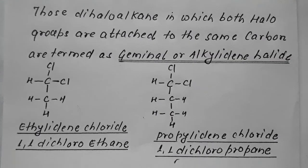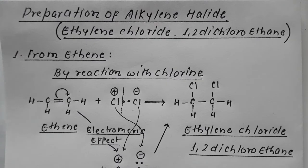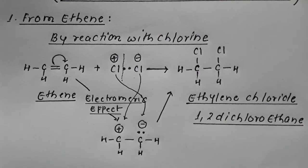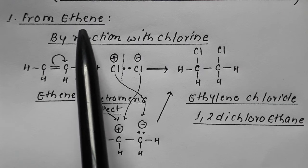So dihaloalkanes are of two types: one is alkylene type termed as vicinal halide, and the second is alkylidene type termed as geminal halide. Now we start with the preparation of alkylene halide — specifically ethylene chloride (1,2-dichloroethane) — and then we will cover ethylidene chloride.